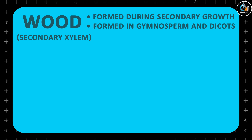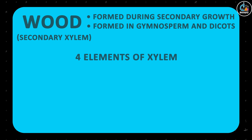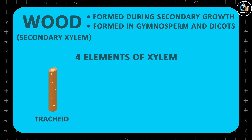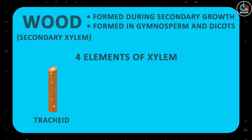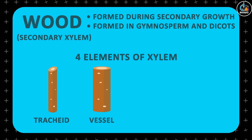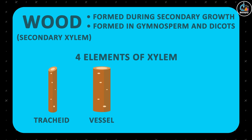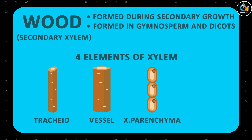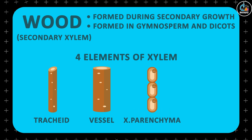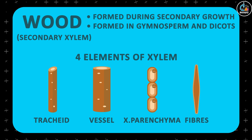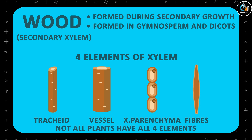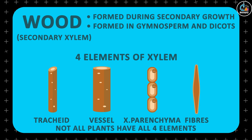The xylem is a complex tissue made up of four different kinds of elements: the two conducting elements, tracheids and vessels, responsible for transport of sap from one part of the plant to another; xylem parenchyma for storage of food and other substances; and xylem fibers to provide structural support. However, not all plants have all four types of elements.